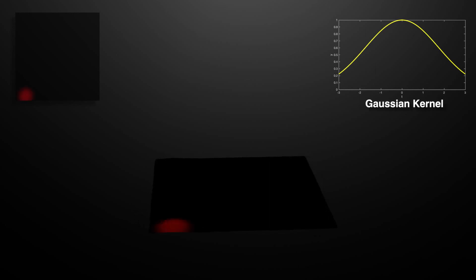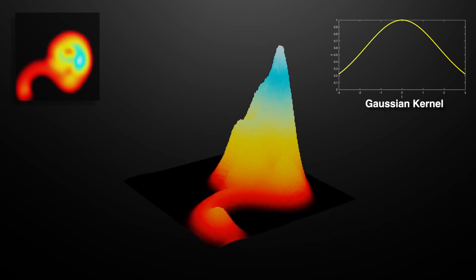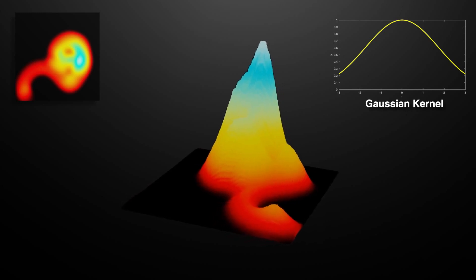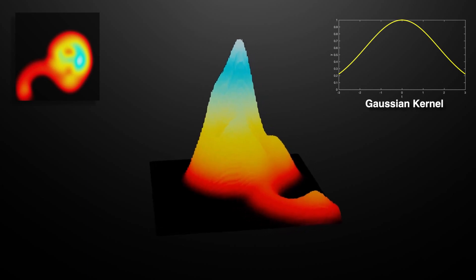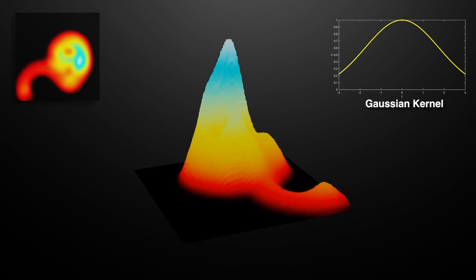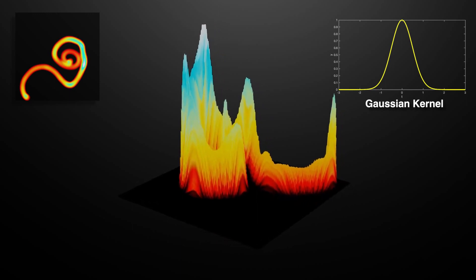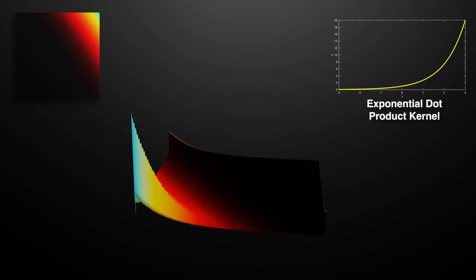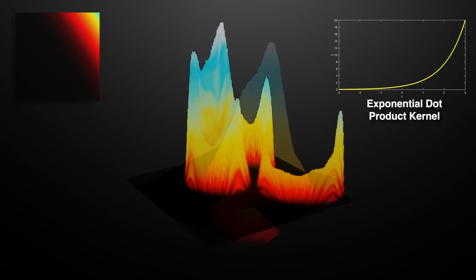Now we are looking at the occupation kernel corresponding to the trajectory we just drew, using the Gaussian radial basis function. As we draw more and more of the trajectory, we see that the regions where the trajectory spends the most time end up having the highest values of our function. If we change the kernel — say, from a very wide kernel to a very thin kernel — we get a different occupation kernel. And if we change from the Gaussian RBF to the exponential dot product kernel, it looks completely different. These are all occupation kernels corresponding to the same trajectory in different Hilbert spaces, and this is the central object of our discussion today.